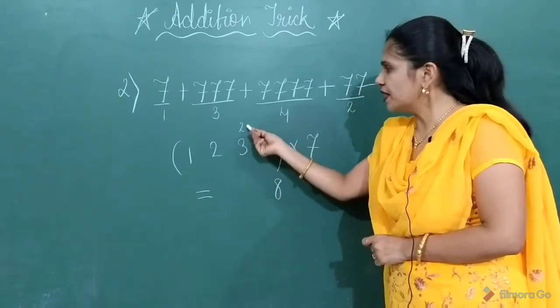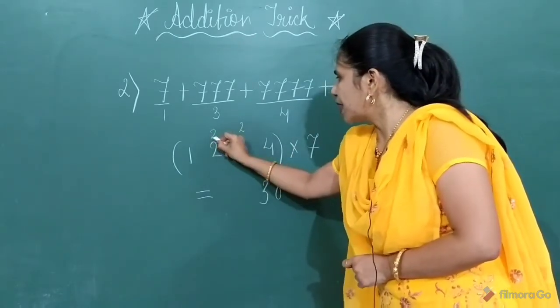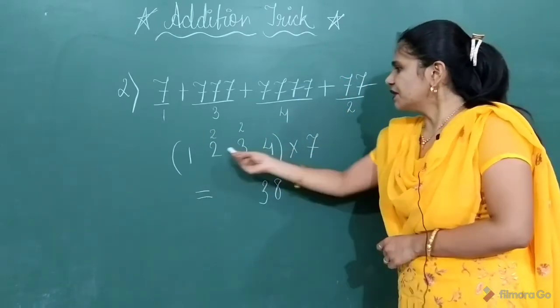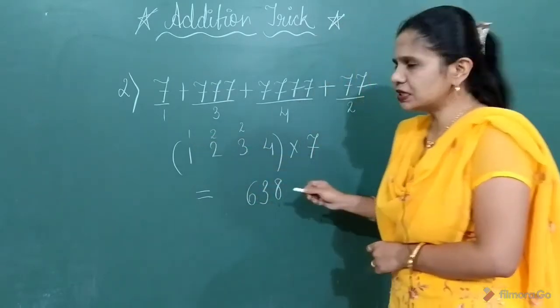7 threes are 21 plus 2, 23. 3, 2 you will carry to the next group. 7 twos are 14 plus 2, 16. 1 you will carry to the next group.